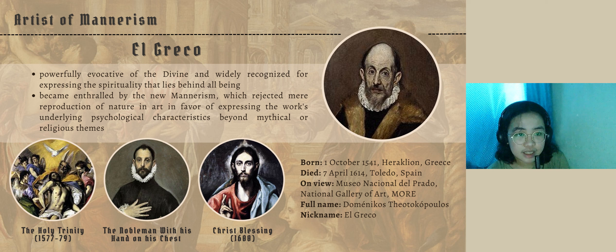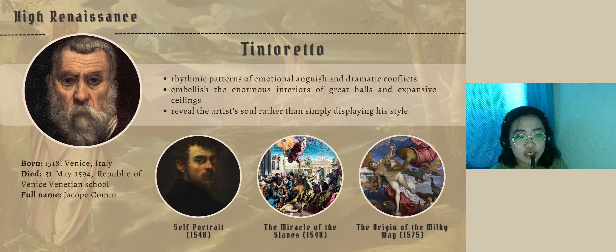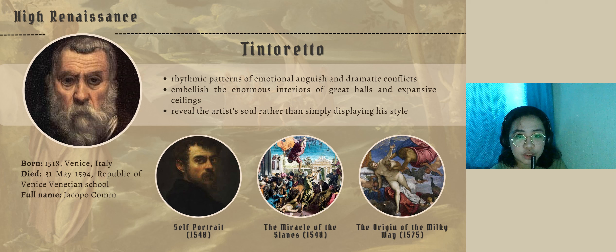Some of El Greco's notable works are Holy Trinity (1577–79), The Nobleman with His Hand on His Chest, and Christ's Blessing from 1600. Next is Tintoretto. In contrast to traditional Renaissance painting, he developed a distinctive style featuring rapid, loose brush strokes and strong contrast between light and dark. Some of his notable works are Self Portrait of 1548, The Miracle of the Slaves (1548), and The Origin of the Milky Way of 1575.